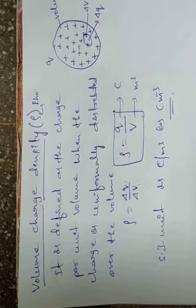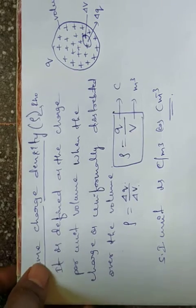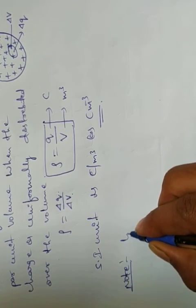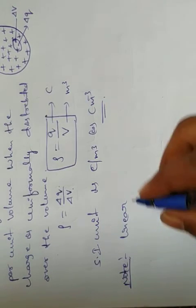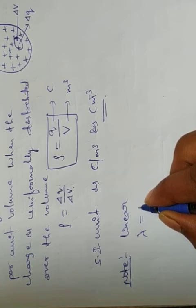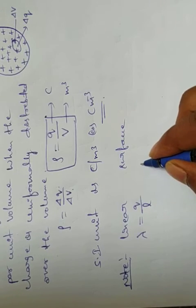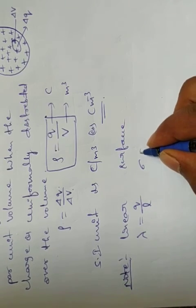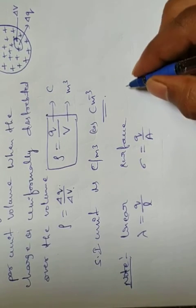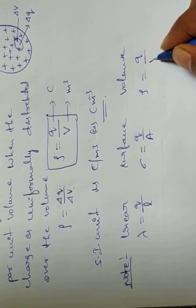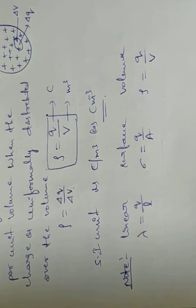These are the three very important charge densities. Linear charge density, indicated with lambda, equals charge divided by length. Surface charge density, indicated with sigma, equals charge divided by area. Volume charge density, indicated with rho, equals charge divided by volume.